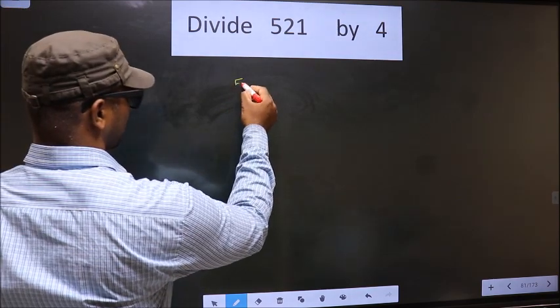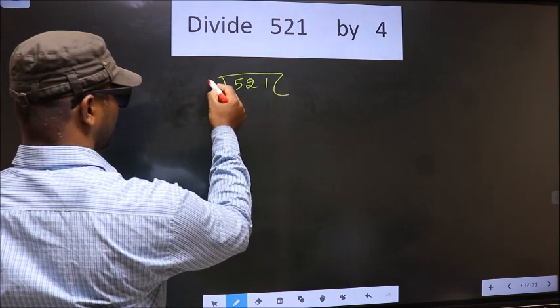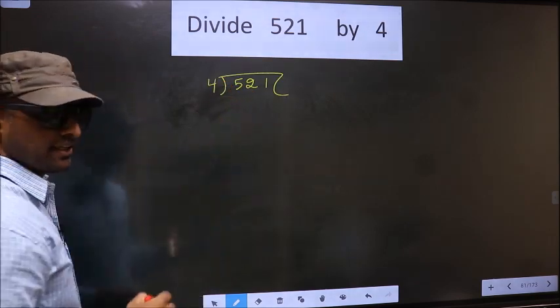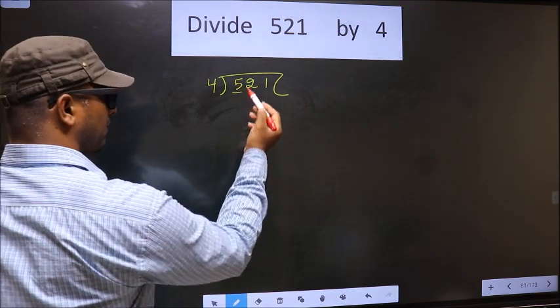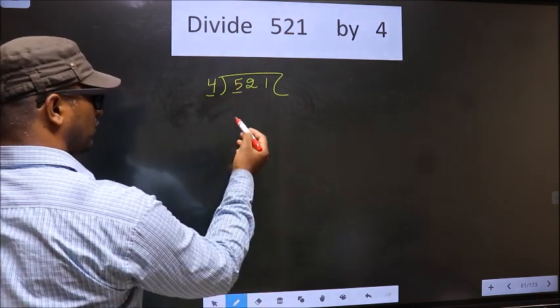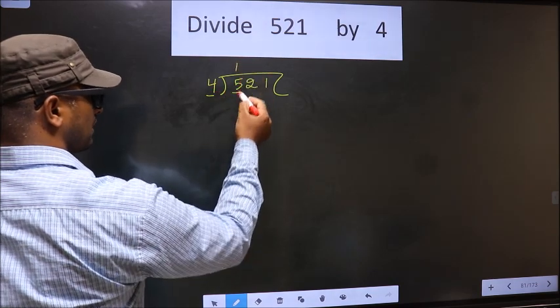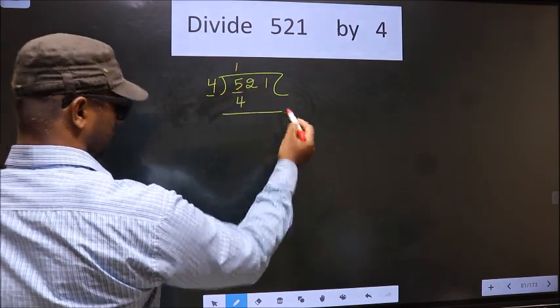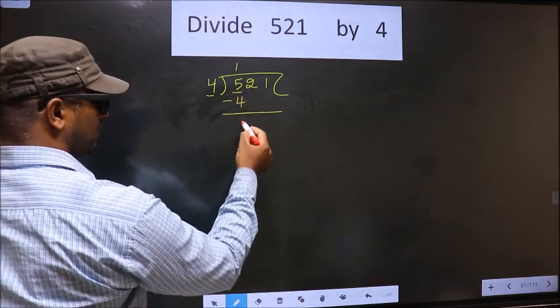That is 521, divided by 4 here. Next, now here we have 5. A number close to 5 in the 4 table is 4 times 1 equals 4. Now you subtract: 5 minus 4 equals 1.